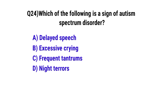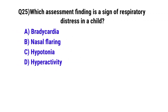Question 24: Which of the following is a sign of autism spectrum disorder? The correct option is A: Delayed speech. Question 25: Which assessment finding is a sign of respiratory distress in a child? The correct option is B: Nasal flaring.